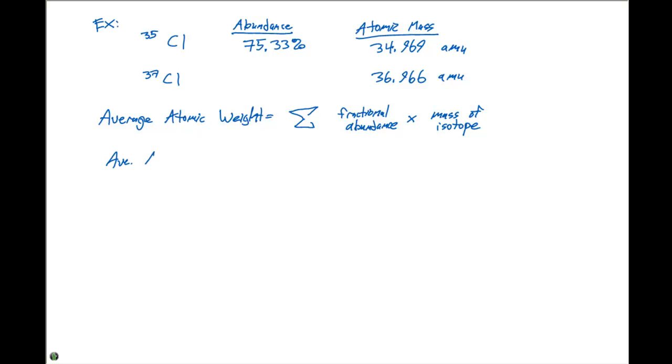So our average atomic weight is going to be equal to the fractional abundance of our first isotope, which we need to express as a decimal. So that's 0.7533 times the mass of that isotope, which is 34.969 AMU, plus the abundance of the second isotope times the mass of the second isotope, which happens to be 36.966 AMU.